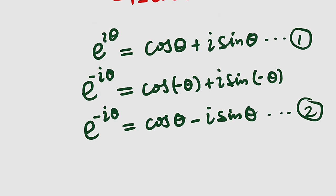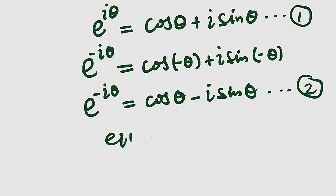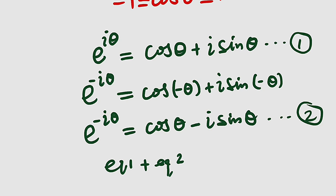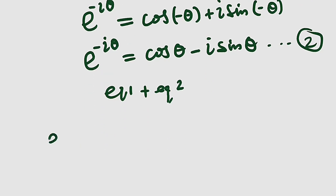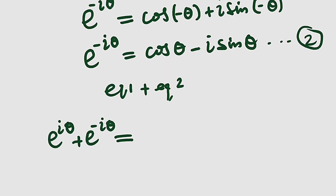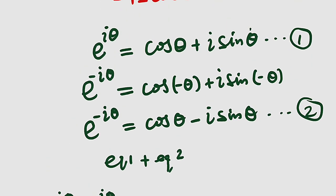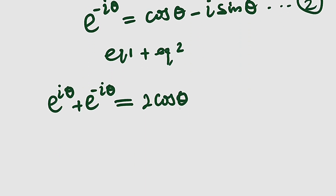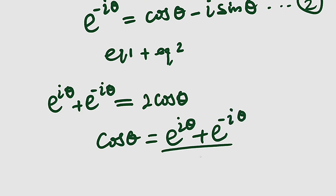Now let us add equation 1 and equation 2 together. From the left-hand sides we get e to the i theta plus e to the negative i theta. On the right-hand side, cosine theta plus cosine theta gives 2 cosine theta, and the i sine theta terms cancel to give 0. So we have e to the i theta plus e to the negative i theta equals 2 cosine theta. Dividing both sides by 2, cosine theta equals (e to the i theta plus e to the negative i theta) divided by 2. This is a very important result — let's call it equation 3.